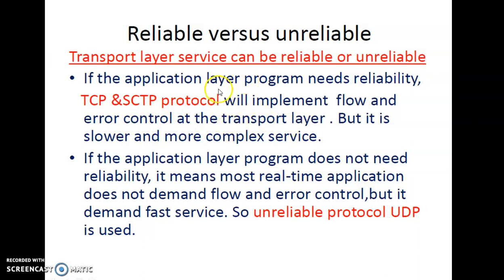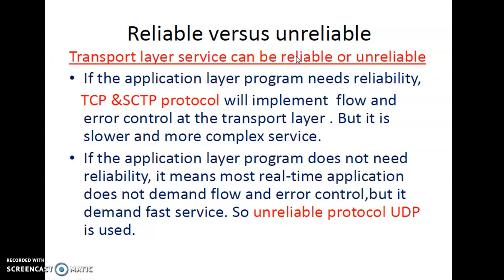If the application does not need reliability — as with most real-time applications that demand fast service — flow control and error control are not mandatory. In such cases, UDP is used. UDP is used for live broadcasting, such as watching a live TV match, while TCP is used for secure communication where reliability and no data loss are essential.